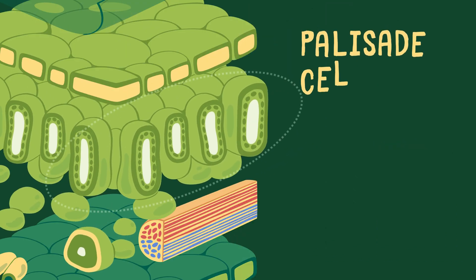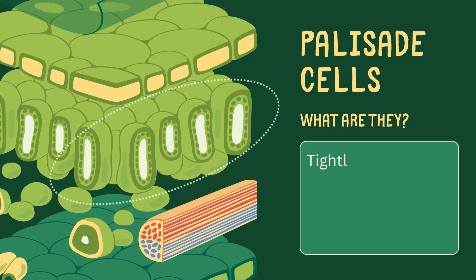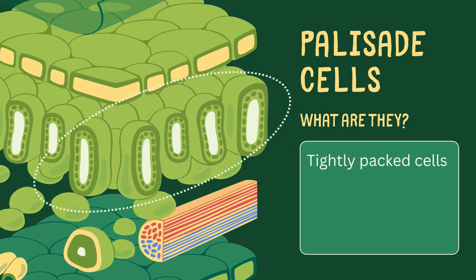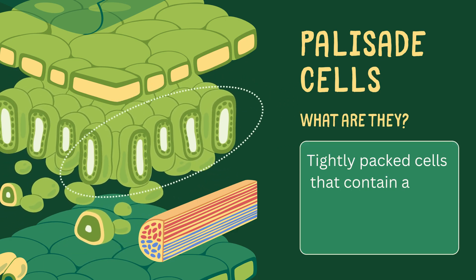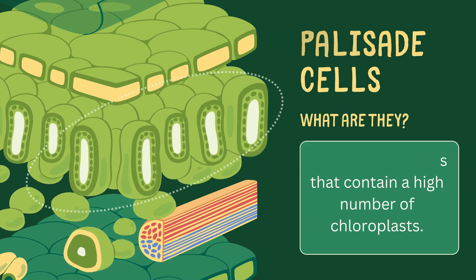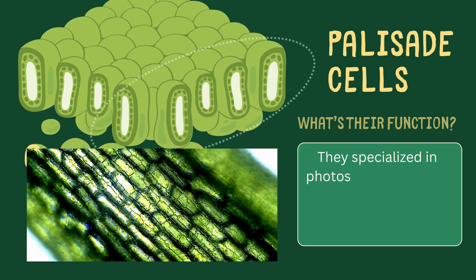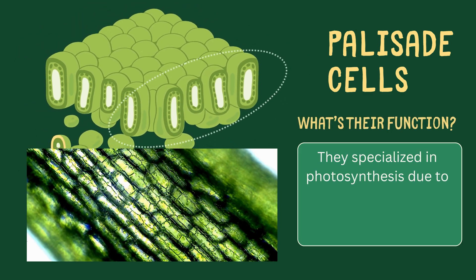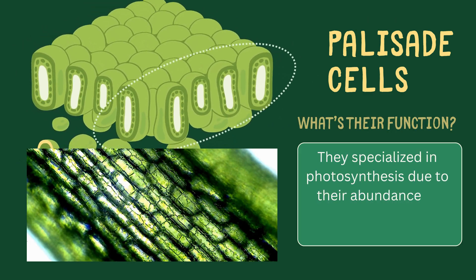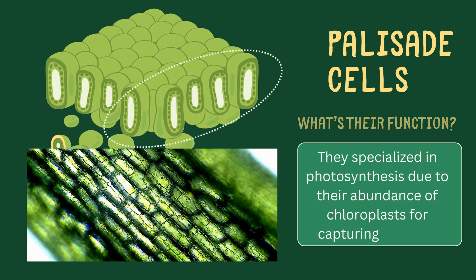Palisade cells. These are tightly packed cells that contain a high number of chloroplasts. They are specialized in photosynthesis due to their abundance of chloroplasts for capturing sunlight.